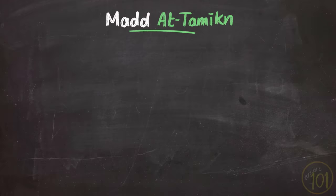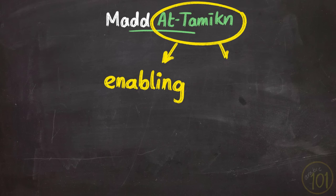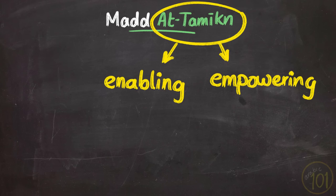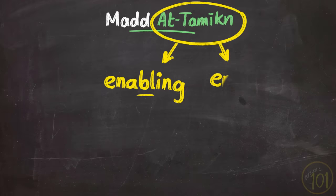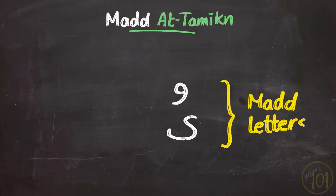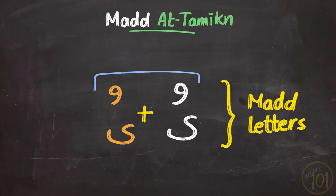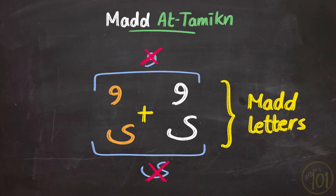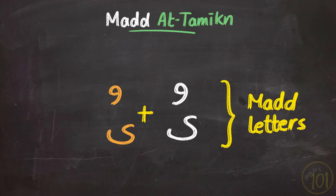So what does it mean? Well, the word التمكين literally means the enabling or empowering. And so مد التمكين is the enabling مد. But what does it enable or empower? Well, the main function of this مد is ensuring that the vowels or the مد letters are not getting fused when they are in close proximity of similar letters.